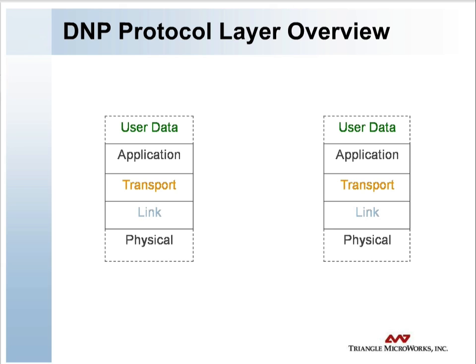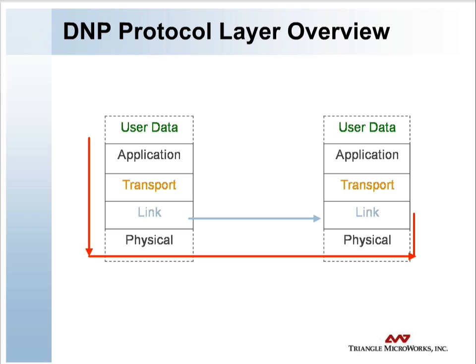When sending, each layer receives data from the layer above it. Each layer then adds more information in order to allow the equivalent layer in the receiving device to properly process the message. When receiving, each layer examines the data for the specific information for that layer and processes the message appropriately. That layer's information is then removed from the message, and the message is passed up the stack to the next higher level for further processing.